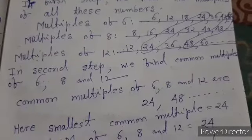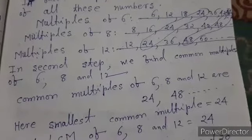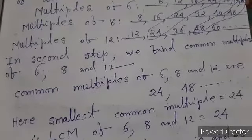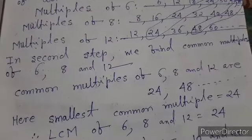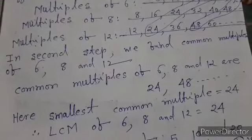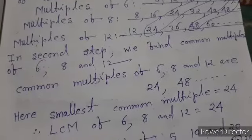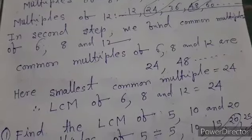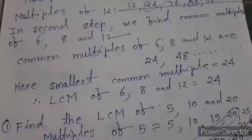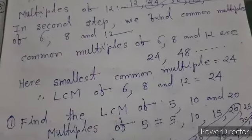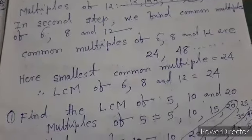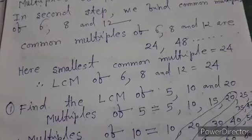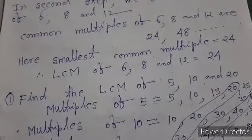In the second step, we find the common multiples of six, eight, and twelve. Here we observe that the common multiples of six, eight, and twelve are twenty-four and forty-eight. Among which twenty-four is the smallest number. Hence, the smallest common multiple is equal to twenty-four. Therefore, LCM of six, eight, and twelve is equal to twenty-four.